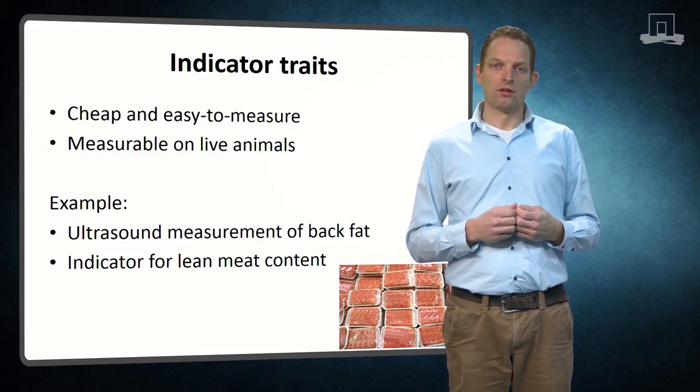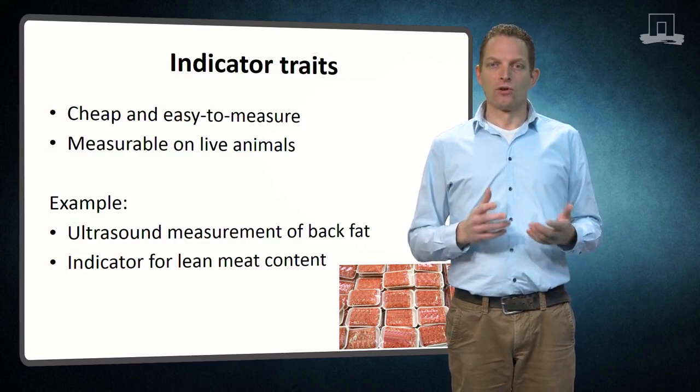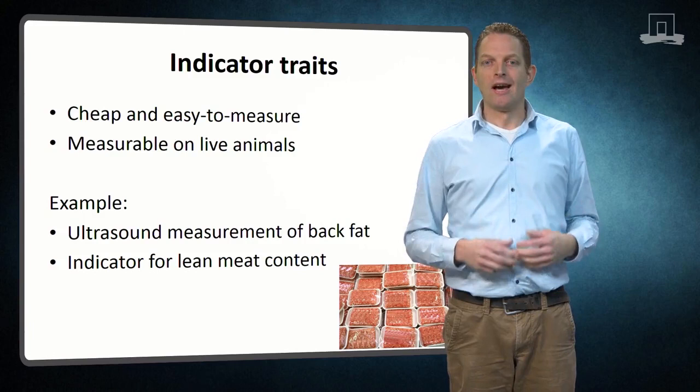An alternative to measuring traits on the carcass is measuring an indicator trait that is related to the trait of interest and can be measured on live animals. For instance, a typical indicator trait for lean meat content in selection candidates in pigs is backfat. Backfat can easily be measured with an ultrasound device that yields a cheap and easy-to-measure indicator trait.